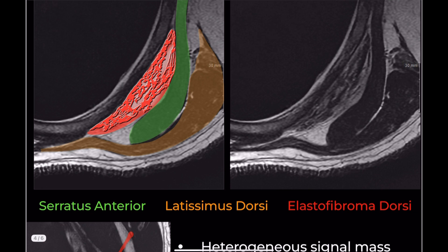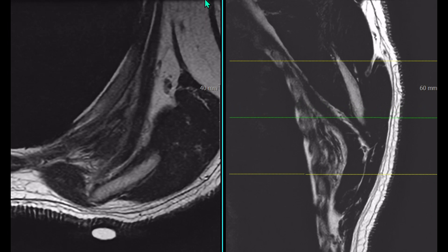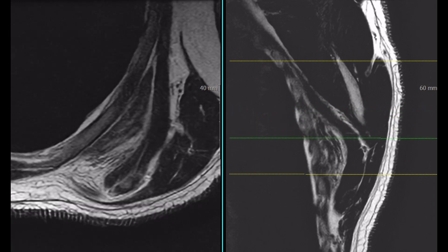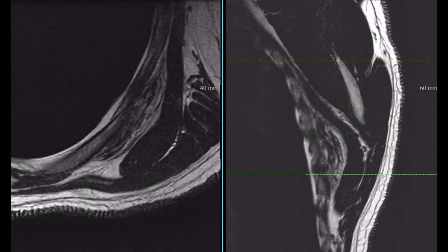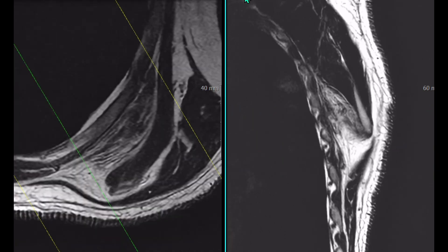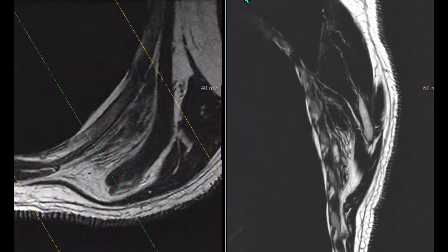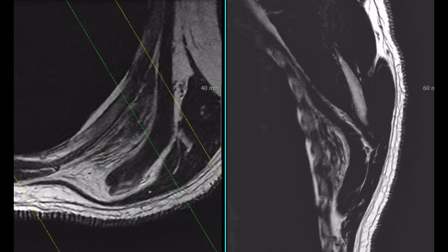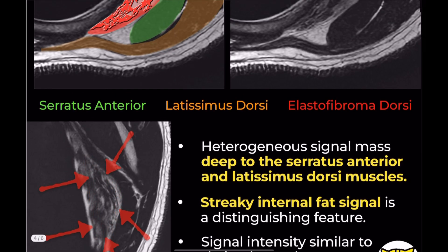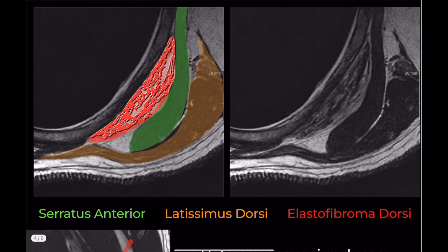One of the hallmark imaging features of elastofibroma dorsi is its fibrous and fatty components. The fibrous component is iso-intense to muscle, while the fatty component shows high signal intensity on T1 and T2 weighted images. This streaky internal fat signal is a distinguishing feature.